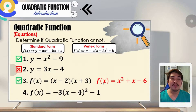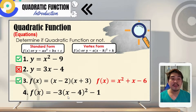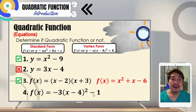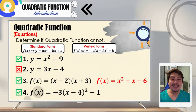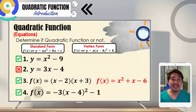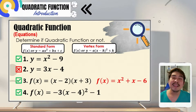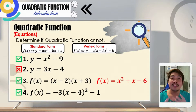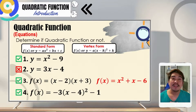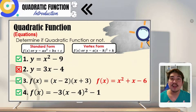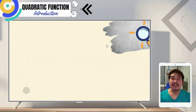For number 4, we are given f of x is equal to negative 3 times the square of the binomial x minus 4, minus 1. This is a quadratic function written in vertex form. It is called the vertex form because at one look, we can immediately identify the vertex of the graph.